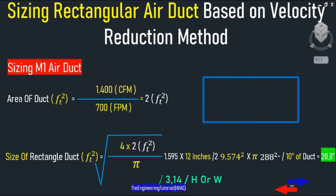Let's start sizing the duct for 1400 CFM first. So 1400 CFM divided by a velocity of 700 FPM, square root of 4 times 2 divided by pi, times 12 inches divided by 2, squared, times pi. That gives us 288 square inches. So this is the area of the main duct for 1400 CFM at the design recommended velocity of 700 FPM.